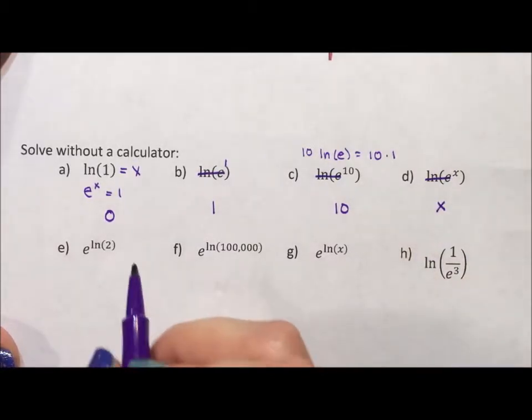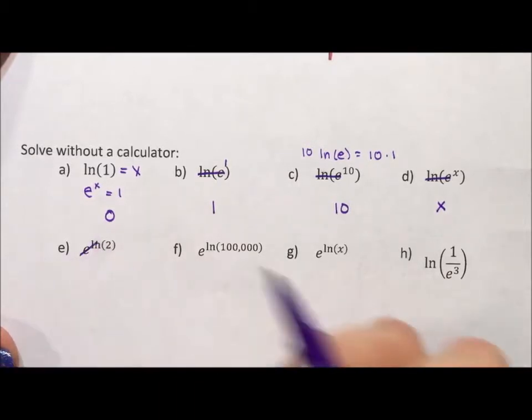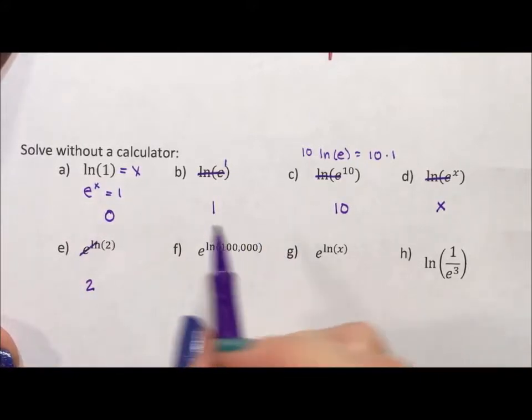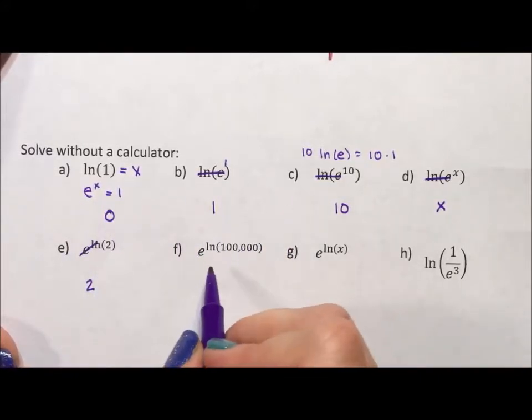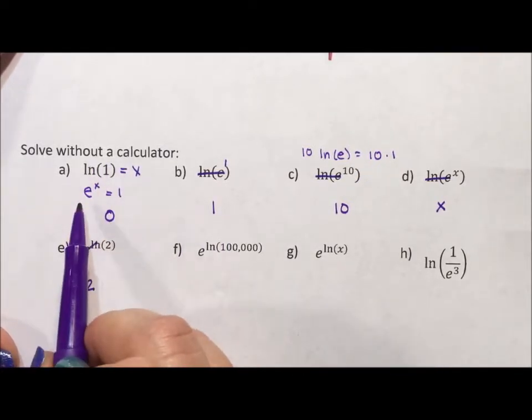All right, these are inverses again, so they undo each other, and we're left with 2. If you're wondering what this would look like going back, you say, kind of looking at what we have here.